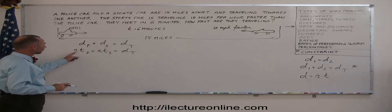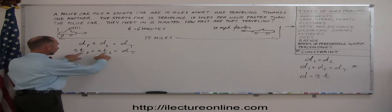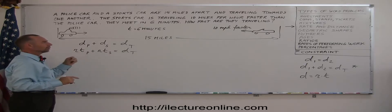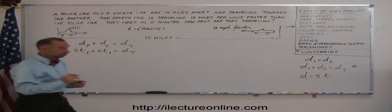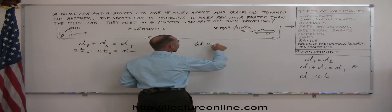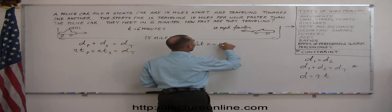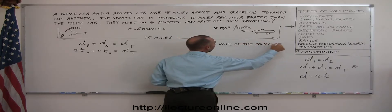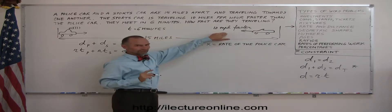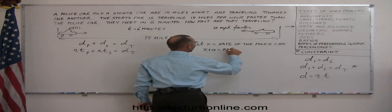Now do we know their rates? We do know their times because it's the same for both. They're six minutes each, so I can put six in each of these. But what are the rates? All I know is that the sports car travels 10 miles per hour faster than the police car. So let x equal the rate of the slowest car, in this case the police car. So let x equal the rate of the police car. And since the sports car travels 10 miles per hour faster, you let x plus 10 equal the rate of the sports car.